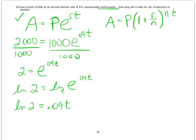And then we just have to divide both sides by 0.09. And we get T has to be approximately ln2 divided by 0.09, which is approximately 7.7 years.